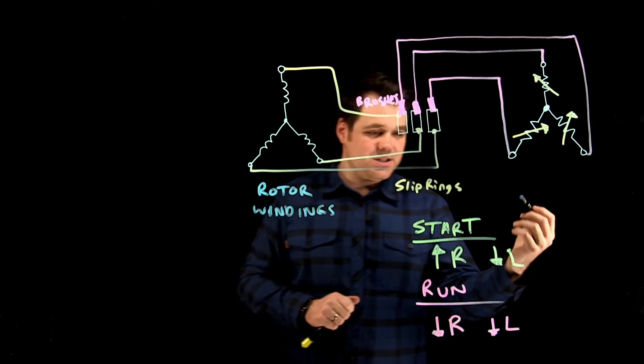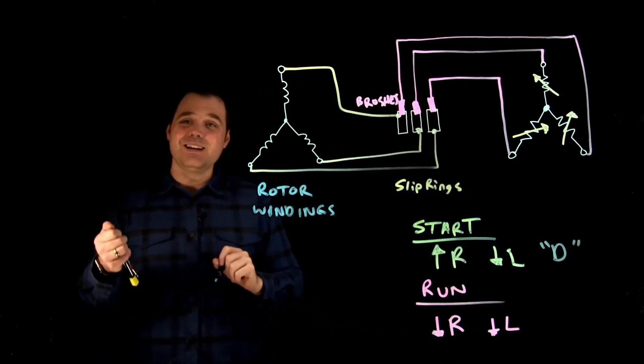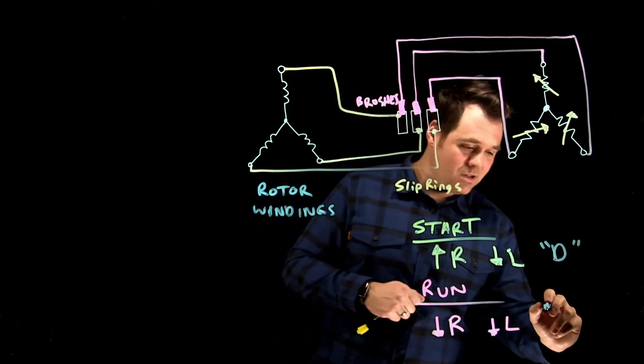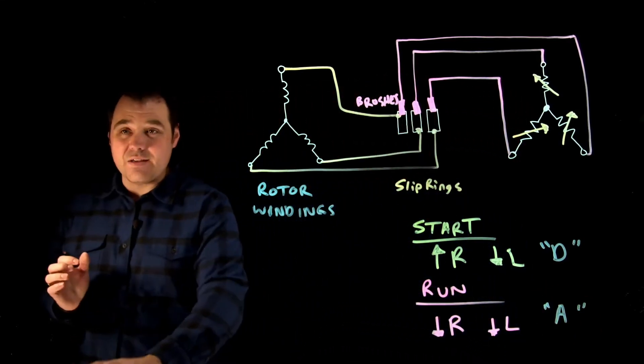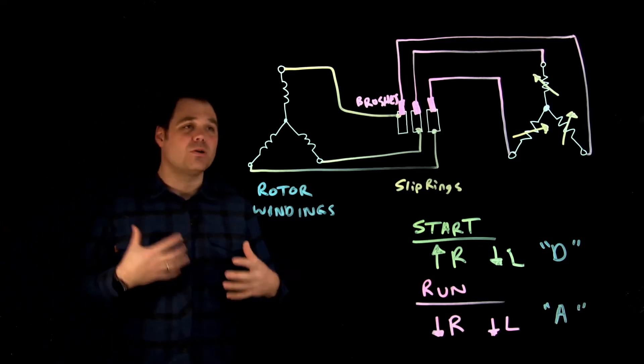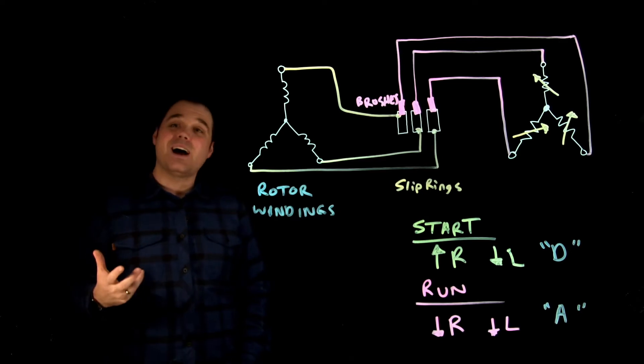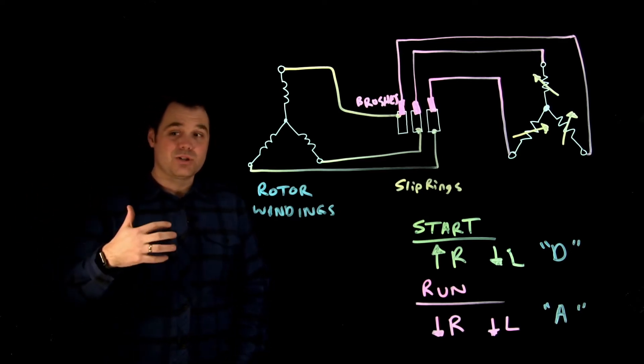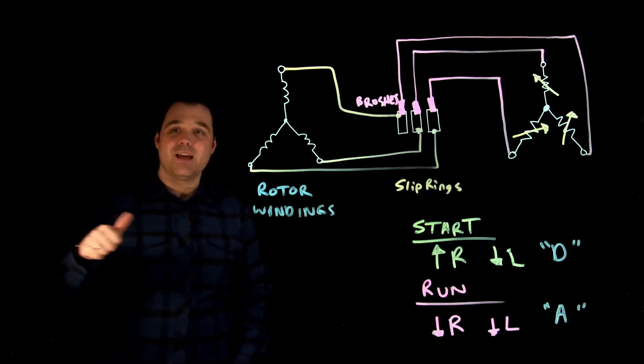So now, as it's running with a low resistance, it runs as a very efficient motor. So we say it starts like a D NEMA rotor design D, and we say it runs like an A, just because it's very efficient. Now, that's awesome. So I can get the best out of both worlds from this motor. That's my advantages of this motor, really high starting torque, low starting current. I really like that starts like a D runs like an A. That's awesome.